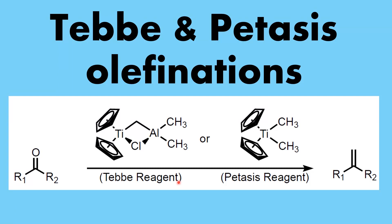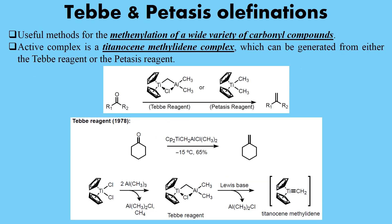Welcome everyone. Today we are going to talk about the chemistry of two very interesting reagents: Takai reagent and Petasis reagent. These two reagents are very well known for carrying out the methylenation of various types of carbonyl moieties, and both are titanium-based compounds with very interesting chemistry.